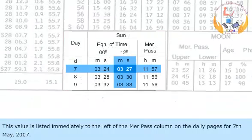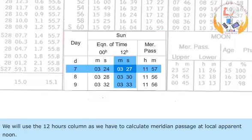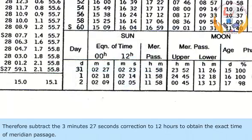This value is listed immediately to the left of the merpass column on the daily pages for 7th May 2007. The value is given as 3 minutes 27 seconds. We will use the 12 hours column as we have to calculate meridian passage at local apparent noon. The value of meridian passage from the merpass column indicates that meridian passage occurs before 12 hours. Therefore, subtract the 3 minutes 27 seconds correction from 12 hours to obtain the exact time of meridian passage.